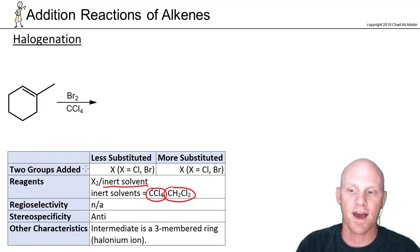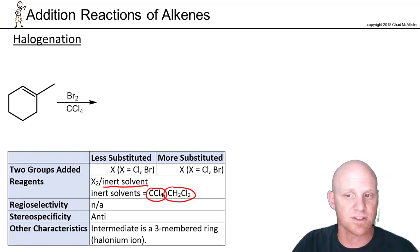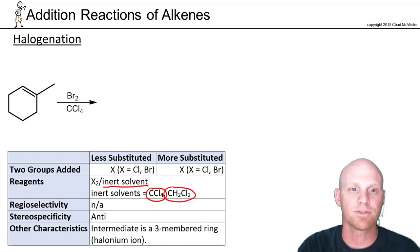Here we're going to add a bromine to both sides. If it was Cl2, it would be adding a chlorine to both sides. And since we're adding the same thing to both sides here, there's no regioselectivity to address.